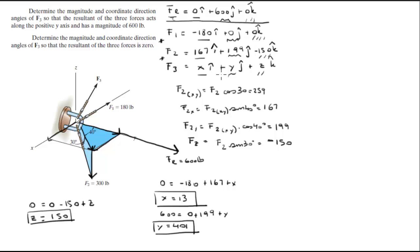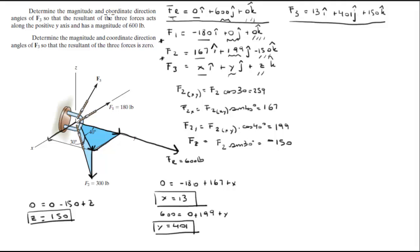So F3 equals 13 i plus 401 j plus 150 k. They're asking for the direction angles and the magnitude. The magnitude is the square root of x squared plus y squared plus z squared, which comes out to be 428.3.